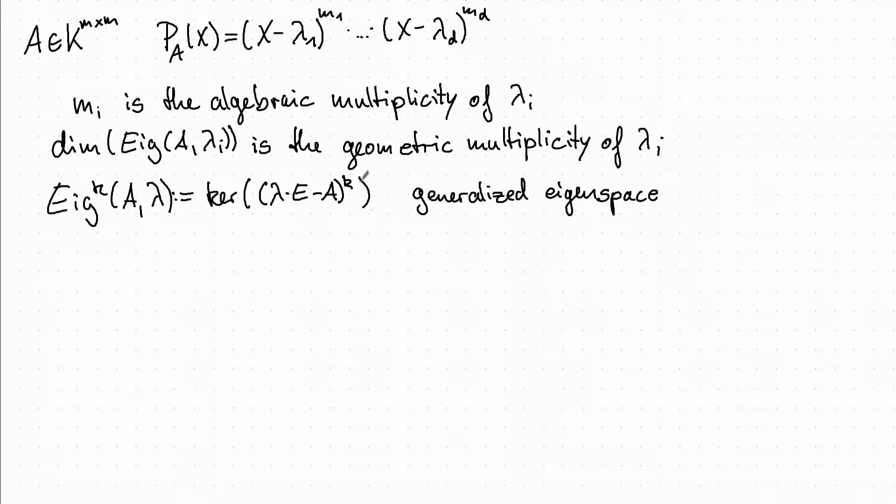We can see that if we choose k to be 1, then this is just the eigenspace that we knew from the beginning.